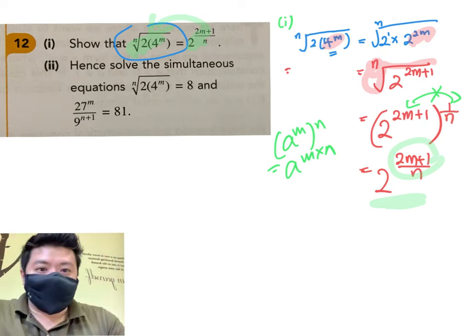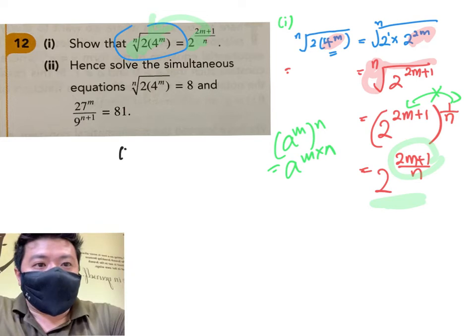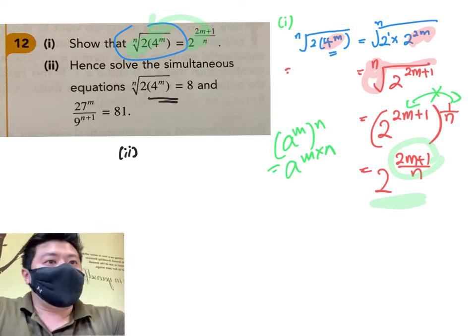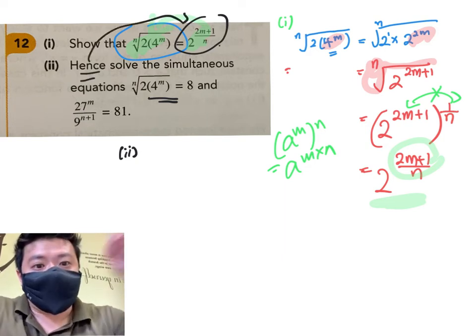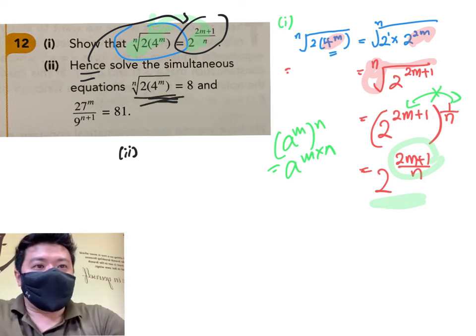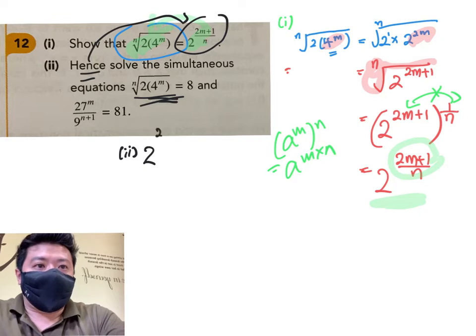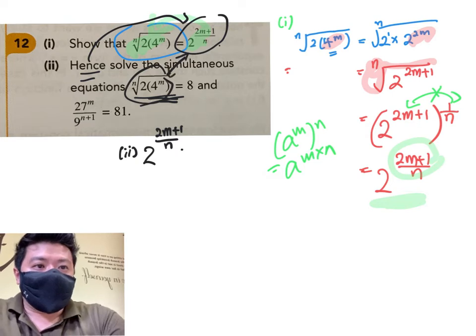I probably won't show you everything, I'm just going to let you try. I think the simultaneous equation is quite trivial. So the first equation here, I already know that it looks something like that. So it means I'm using the first part to help me. So I'm solving the simultaneous equation. From here, this is 2 to the power of 2m plus 1 over n, because this equals to this,